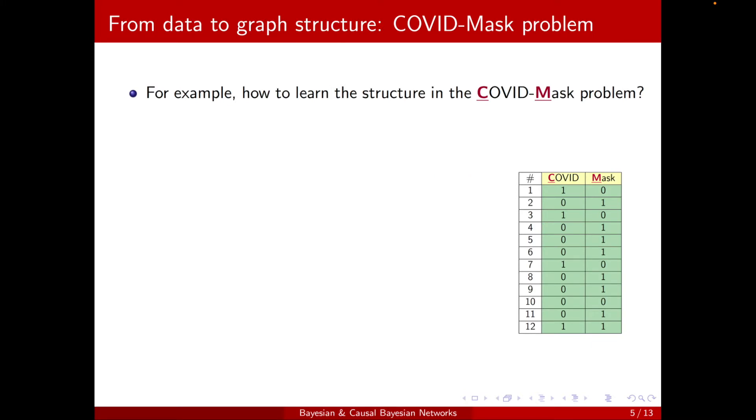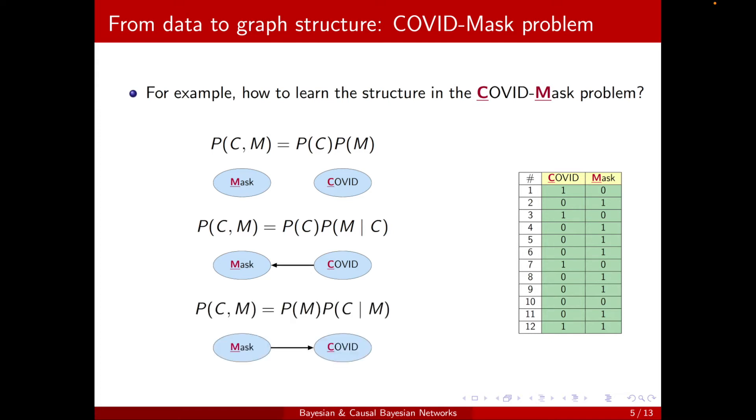Now, back to our example, let's focus on a smaller case, just the COVID-Mask, not all the 12 variables, how to learn the structure. And we know we can have three different structures. They can be completely independent. We can have an arrow from COVID to Mask, or the other way around.